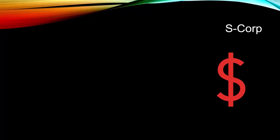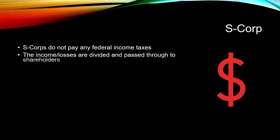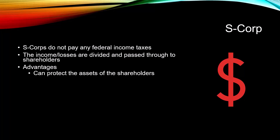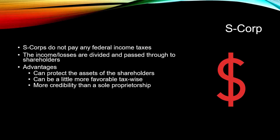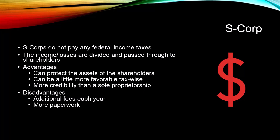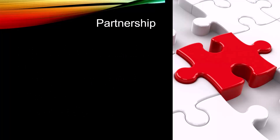An S-Corp is the next type of business entity. S-Corps do not pay any federal income taxes — income and losses are divided and passed through to the shareholders. This is probably what most people will start with in the United States. Advantages include protecting shareholder assets and more favorable tax treatment than a C-Corp, as well as more credibility than a sole proprietorship. Disadvantages include additional annual fees, more paperwork, closer IRS scrutiny, and stock ownership restrictions.